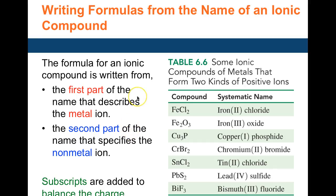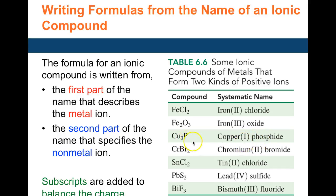When writing formulas from the name of an ionic compound, iron(II) chloride — iron is 2+, each chloride is 1−, so you need two chlorides: FeCl2. Iron(III) oxide — iron is 3+, oxide is 2−, crisscross gives Fe2O3. Copper(I) phosphide — copper is 1+, phosphide is 3−, crisscross gives Cu3P.